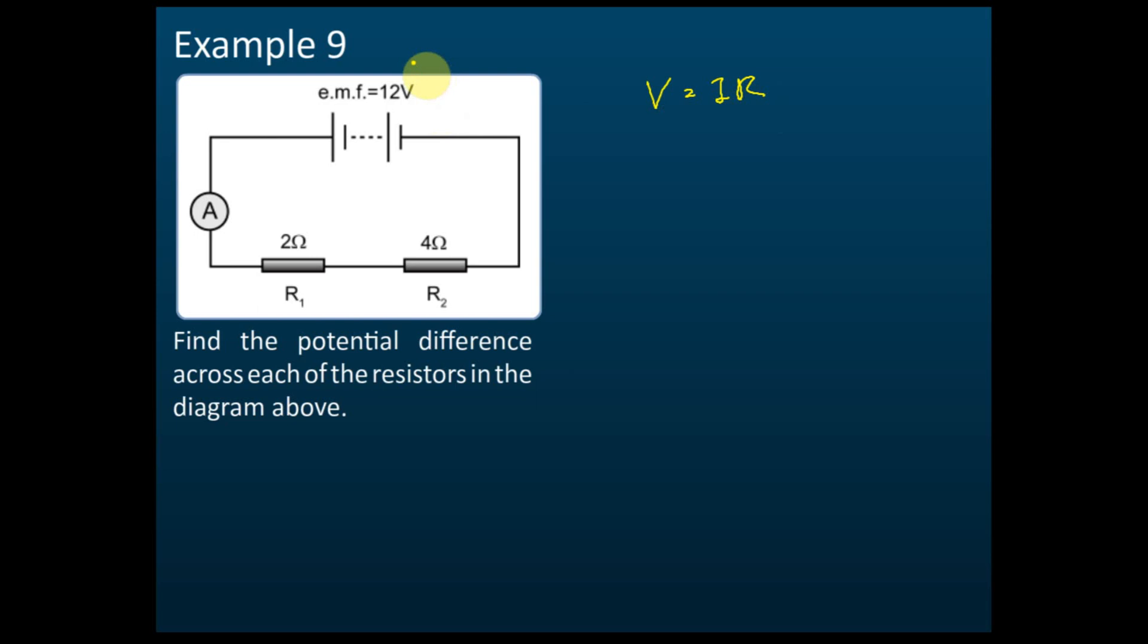We have V equals 12 volt. Now, if you use this, you must know which two points to measure this V. You can choose from here to here, or from here to here. Let's say we choose this one for our V, and it's 12 volt. Then the resistance will be 6 ohm, therefore the current equals 2 ampere. You must find the current first, then only you can find the potential difference across each resistor.